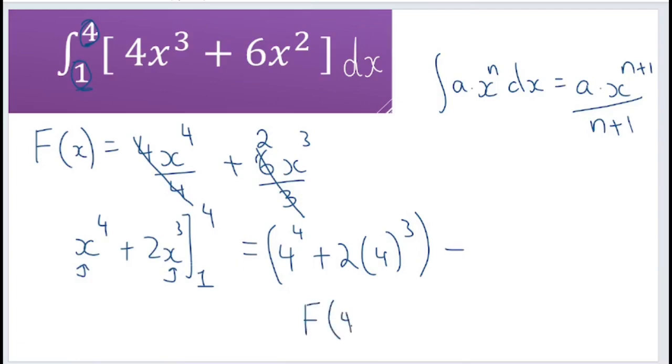So we have essentially this is our f of 4 and now we're minusing f of 1 from that. So we're going to sub in 1 everywhere you see x. So this is going to be, again put a bracket, 1 to the power of 4 plus 2 times 1 to the power of 3.